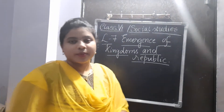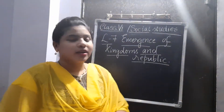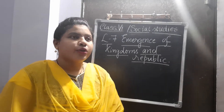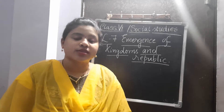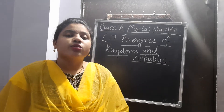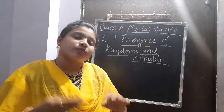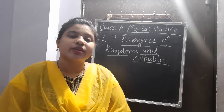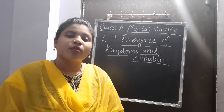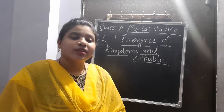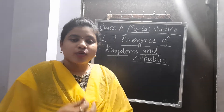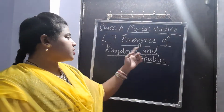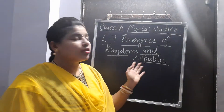In Lesson 7, Emergence of Kingdoms and Republics, we are going to learn about kingdoms, or a group of kingdoms together, a group of villages or cities together. We will talk about what happened some 2000 to 3000 years ago — what kingdoms existed, how people used to live, and what things they used. We will learn how we can know all these things in this part of the lesson.